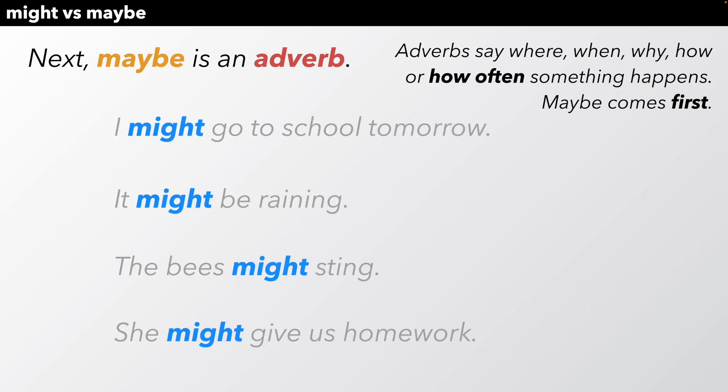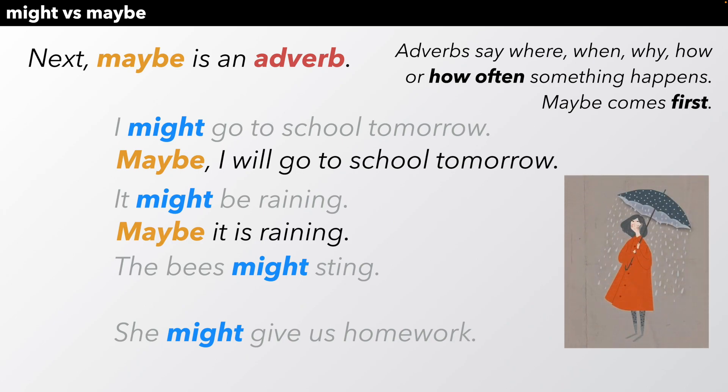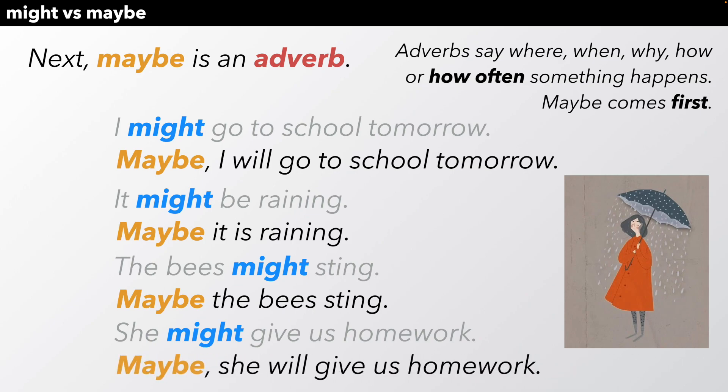Here's our might examples. Let's change them to maybe sentences. Maybe I will go to school tomorrow. Maybe comes first. Maybe it is raining. Maybe the bees sting. Maybe she will give us homework. All of these example sentences show you that maybe comes first in the sentence.